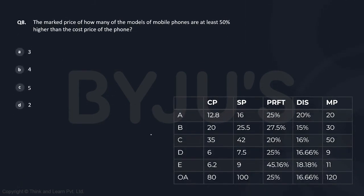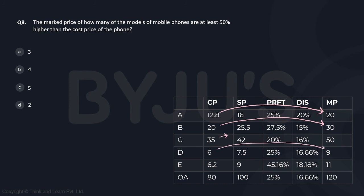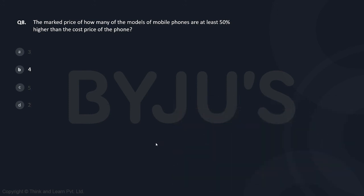Next question: the marked price of how many models is at least 50% higher than the cost price? Checking each model — for A it is more than 50% higher, for one it is exactly 50% more, for another it is not 50% more, for one it is exactly 50% more, and the last is at least 50% more. So there are 4 such models. The answer is 4.